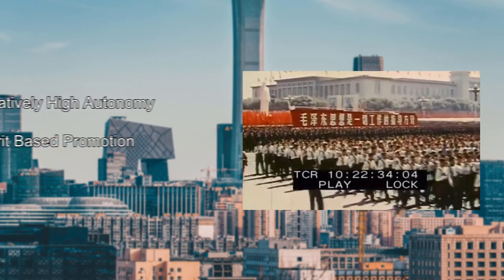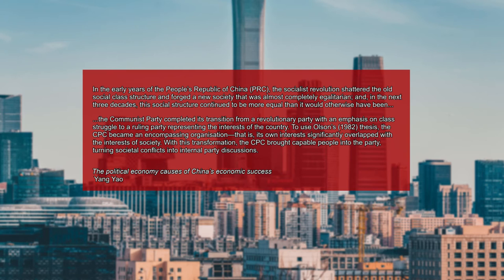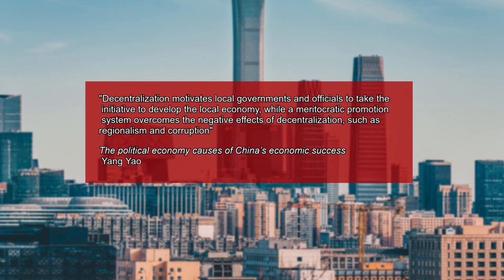As noted in the study on the political economy causes of China's economic success, in the first couple decades of Communist Party rule, the party developed a relatively more egalitarian social class structure by removing the old class structures, in which the CPC became an encompassing organization — that is, its own interests significantly overlapped with the interests of society. Secondly, the party's meritocratic selection system helps mitigate a good degree of potential downsides of economic decentralization. Decentralization motivates local governments and officials to take the initiative to develop the local economy, while a meritocratic promotion system overcomes the negative effects of decentralization, such as regionalism and corruption.